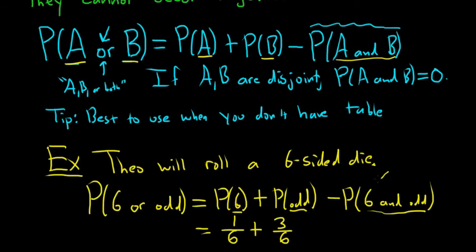And if you roll a single die, is it possible to roll a six and an odd number? No! It's impossible. So that's zero. So this is an example of two events that are disjoint, right? You cannot roll a single die and get a six and an odd number. These are disjoint events. They cannot occur together.